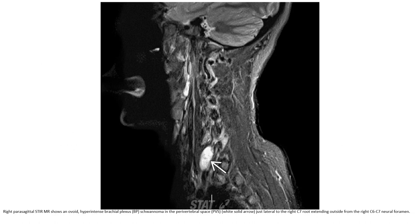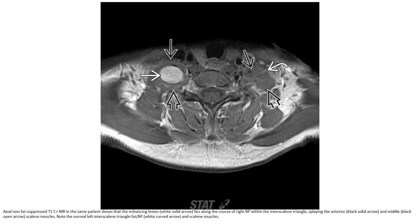On parasagittal STIR MRI, there is a hyperintense Brachial Plexus Schwannoma in the paravertebral space, just lateral to the C7 nerve root, extending outside from the C6-C7 neural foramen. The C7 root system and inter-scalene triangle bed are identified.